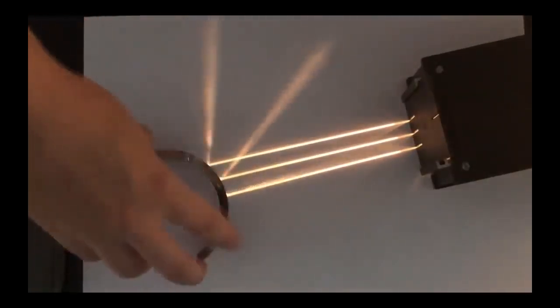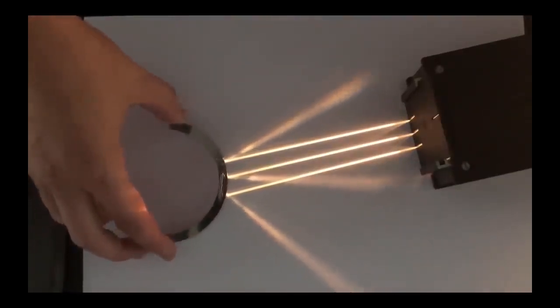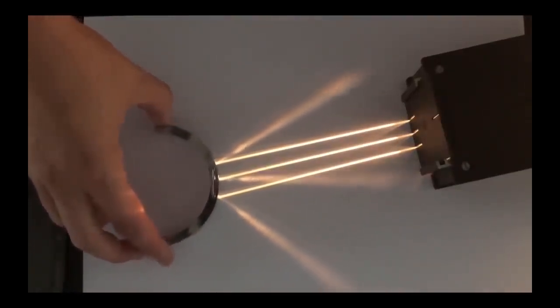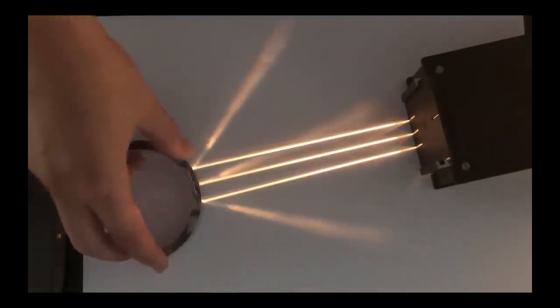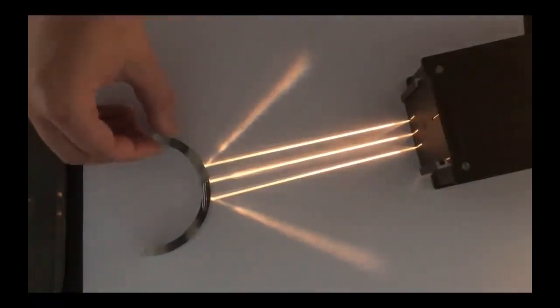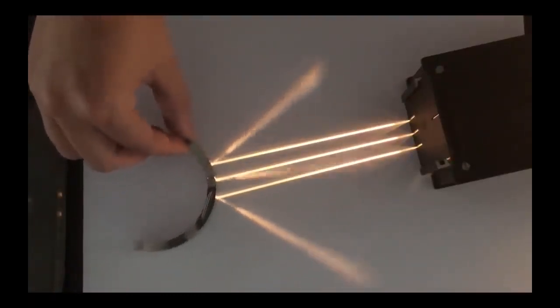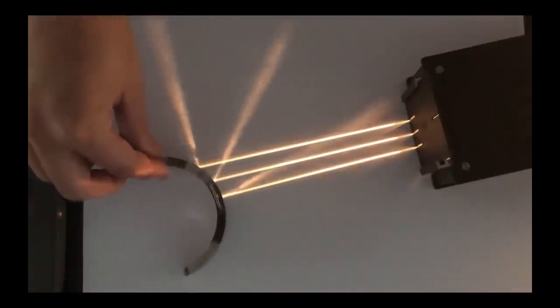Now when we're looking at a convex mirror here, the complete opposite happens. So instead of the rays being focused towards one another and we end up with a focal point, this actually causes the light to disperse. You can see that as the light hits the mirror, those beams are moving outwards, not towards one another.